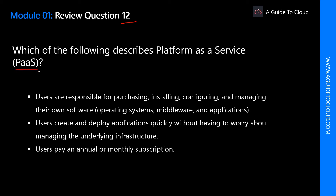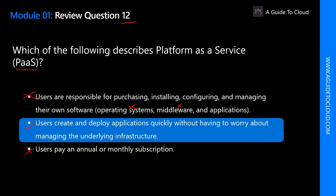Question 12: Which of the following describes platform as a service? We need to read through the statements to see which one appropriately matches PaaS. The first statement — 'users are responsible for purchasing, installing, configuring, and managing their own software, operating system, middleware, and application' — is not correct, because in PaaS you don't manage the OS or middleware; you only take care of your application and data. The second statement — 'users create and deploy applications quickly without having to worry about managing the underlying infrastructure' — is absolutely correct for PaaS. The last option — 'users pay an annual or monthly subscription' — is an example of SaaS.